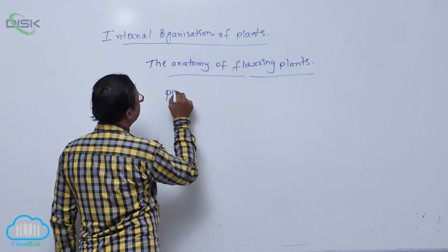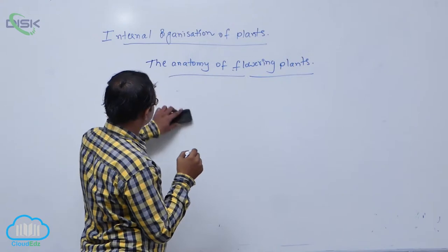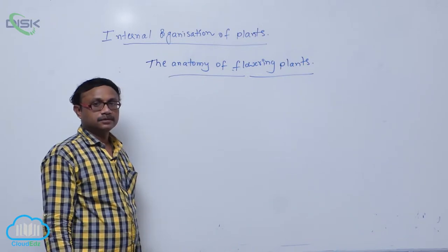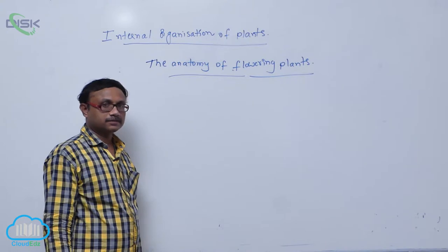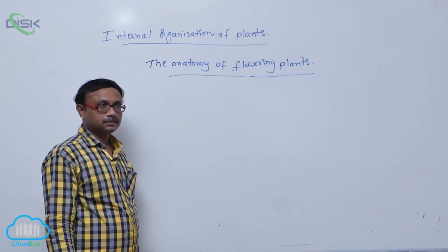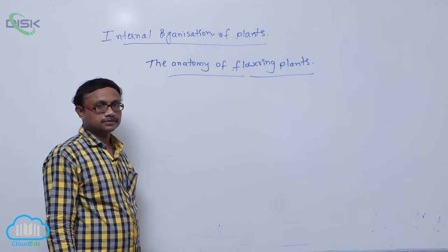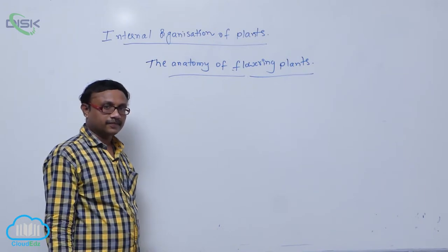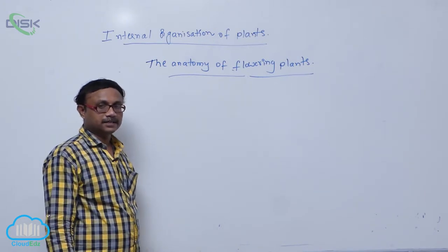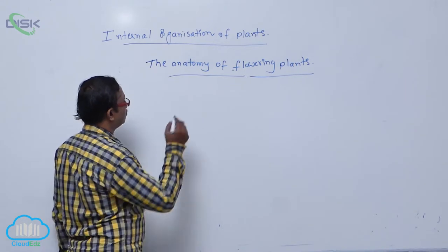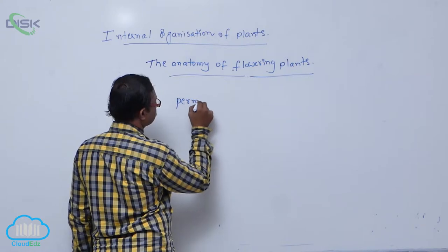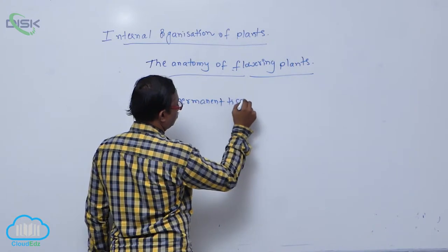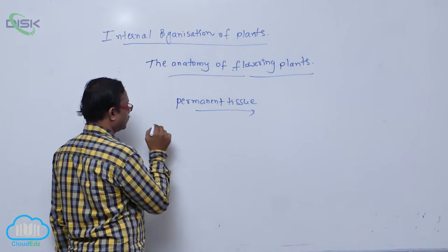Some cells are not able to divide. They are formed from mature tissues. They are not able to divide; they perform different functions. They are known as permanent tissue. Permanent tissue means, in plants, some tissues...